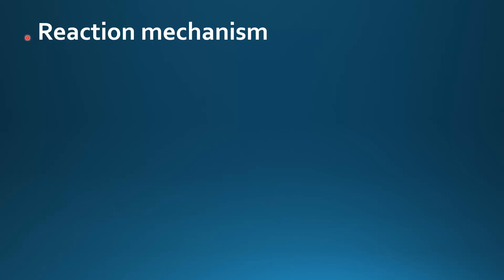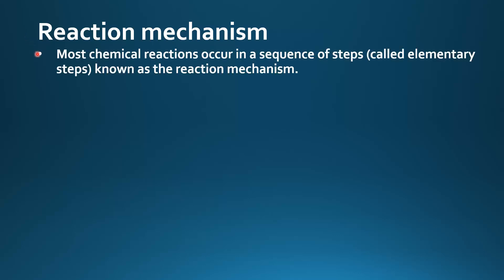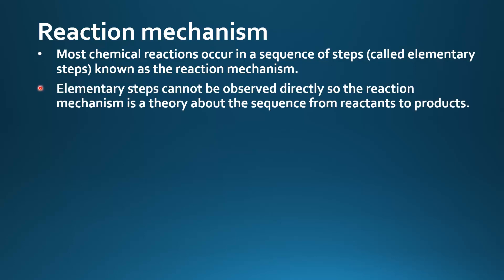In this video we look at the reaction mechanism. Most chemical reactions occur in a sequence of steps called elementary steps, known as the reaction mechanism. Because elementary steps cannot be observed directly, the reaction mechanism is a theory about the sequence from reactants to products.